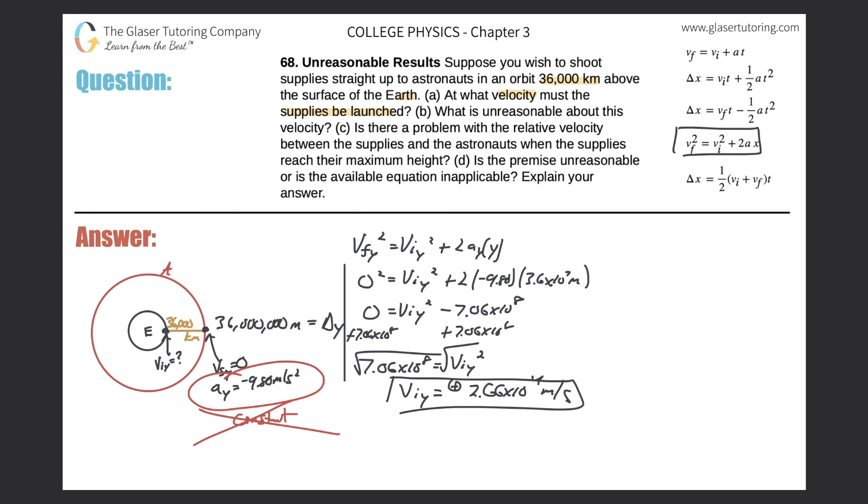And then letter d, it says is the premise unreasonable or is the available equation inapplicable? I mean, is the premise unreasonable? Yeah, I think both. The premise is unreasonable. The equation isn't unreasonable, but we would have to probably adapt it because like I said, the acceleration is really a function of distance, so we probably have to do a little calculus here to figure it out. But anyway guys, that should answer it. Hopefully that helps. Please remember to subscribe. Until next time.